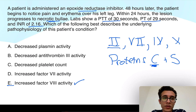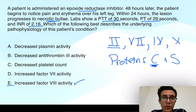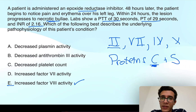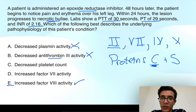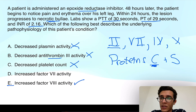Now for the incorrect answer choices. Answer choice A: plasmin is responsible for fibrinolysis — decreased plasmin activity would cause hypercoagulability and could predispose to skin necrosis, but plasmin is not dependent on epoxide reductase for activation. Same with antithrombin 3 — it's not dependent on epoxide reductase, so it won't be affected. Antithrombin 3 inhibits thrombin, so decreased activity raises thrombin activity. Answer choice C could make you think of HIT, but it's not affected by epoxide reductase, and HIT presents with purpura, not necrotic bullae.